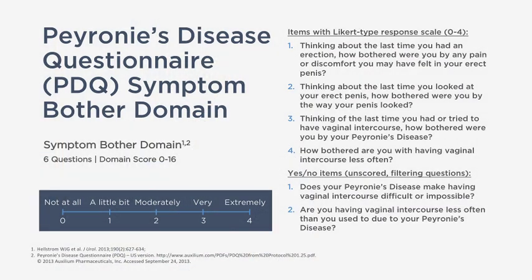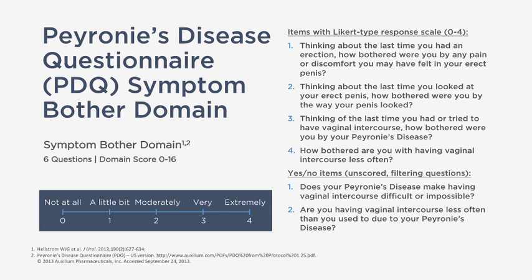If you come to my office, you will receive a questionnaire called the PDQ, which is the most commonly used questionnaire for Peyronie's disease. The full version involves 15 questions; the shorter version has six questions assessing your level of bother. If a patient has a curvature when erect but is not bothered by it, it wouldn't make sense to treat him. Conversely, if a patient has even a slight curvature and is extremely bothered, then treatment would be warranted.